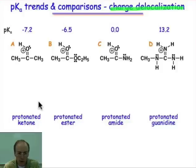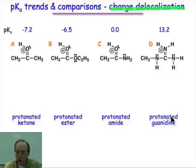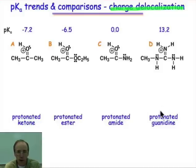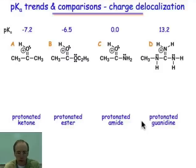For the protonated ketone, we'll see that there's relatively little delocalization available, whereas in the case of the protonated guanidine group, we have the ability to spread charge over three nitrogen atoms. Those nitrogen atoms are going to greatly offer stability to that cation, making it a very weak acid. So let's pull out those delocalized forms.